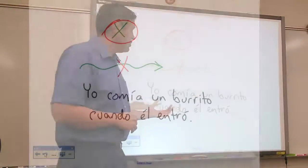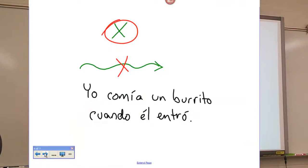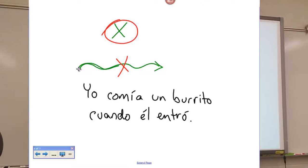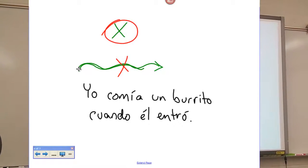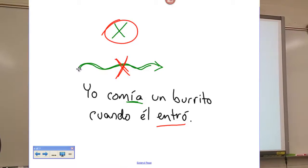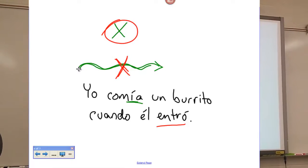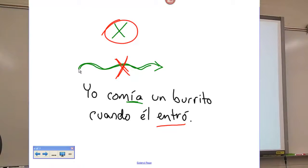So those are the imperfect endings. For example: yo comí un burrito cuando él entró. The green line — what you were doing — that's imperfect, something that was going on. What you see here in red — what interrupted the action — that's preterite, the BAM, when he entered.